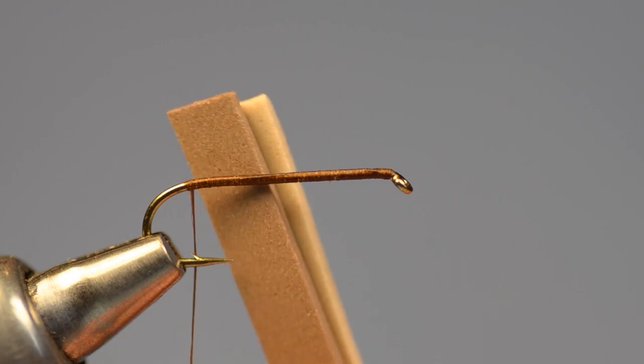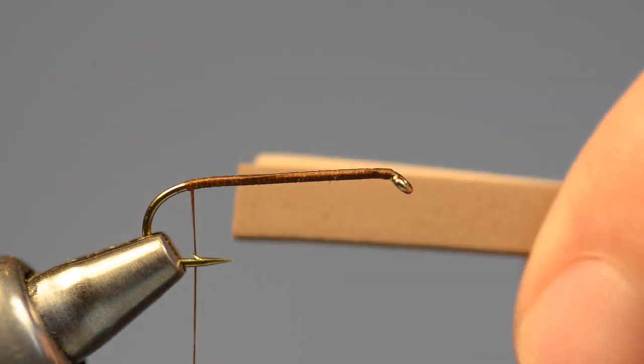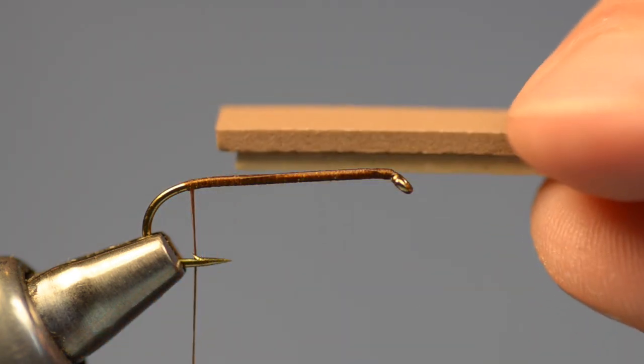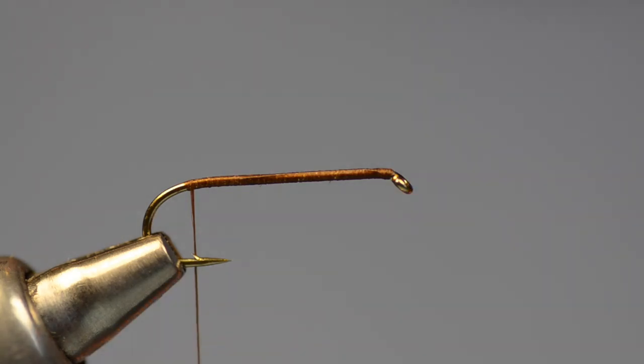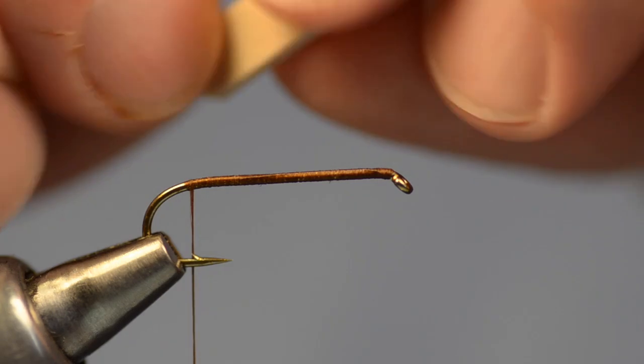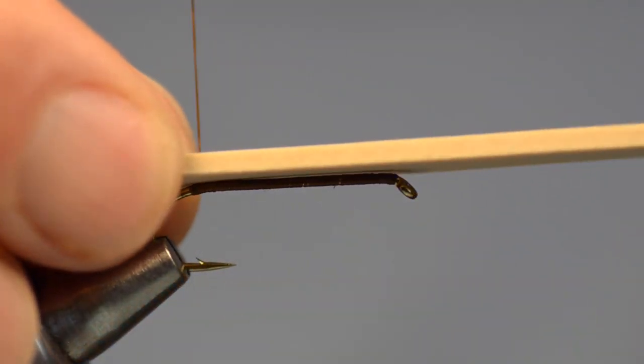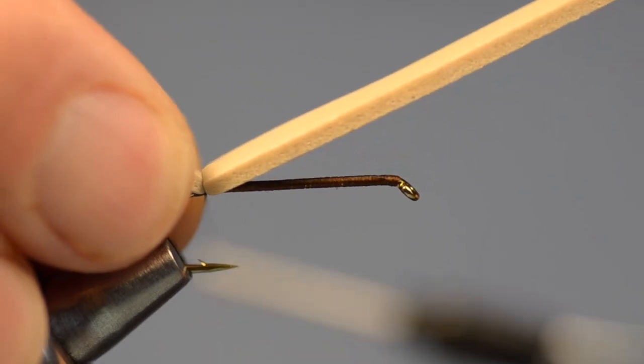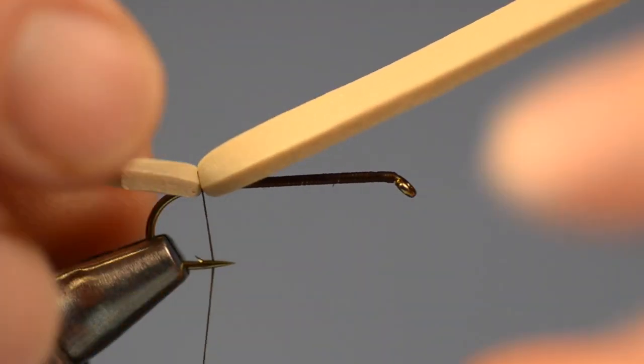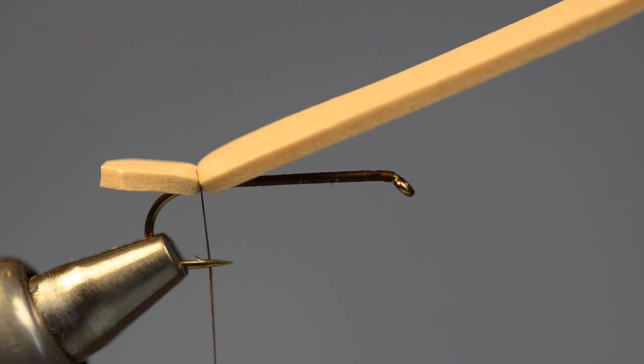So what I've got here are two slices of foam that are about as wide as the gap of the hook. One of them is brown and one of them is tan. I'm going to take the tan one to start with and I'm going to knock the corners off the end. And I'm going to measure this in at the bend so it's about a hook gap, maybe just a little short of a hook gap. And I'm going to tie this in with an upright wrap and cinch that down with just a couple few turns there so that it's centered right on top of the hook.